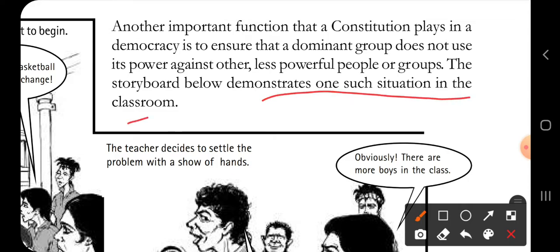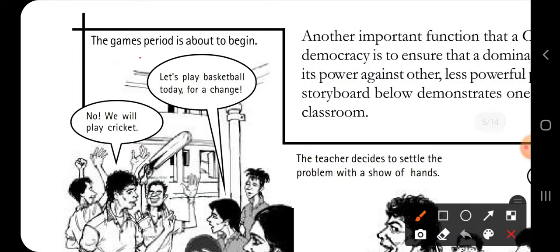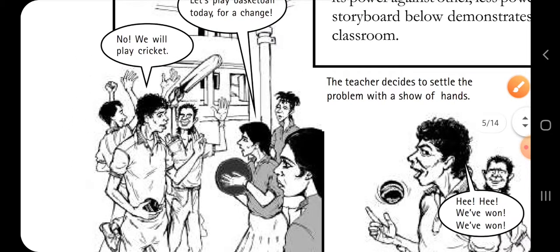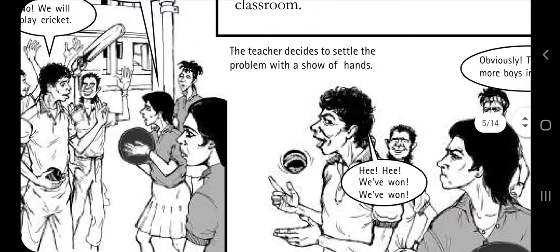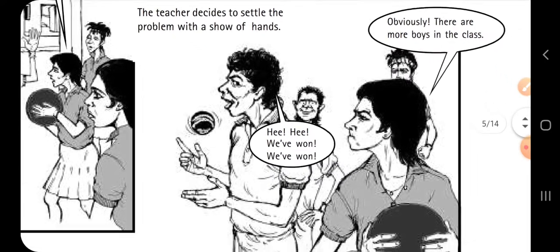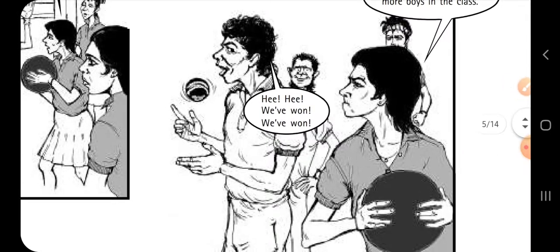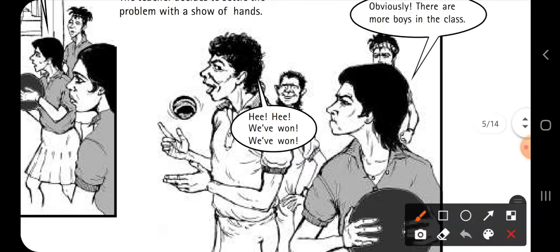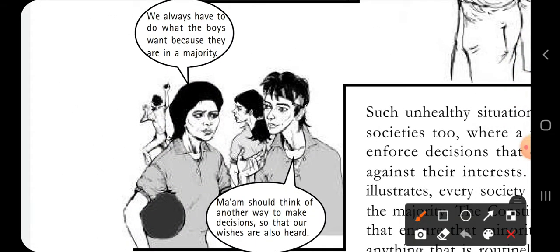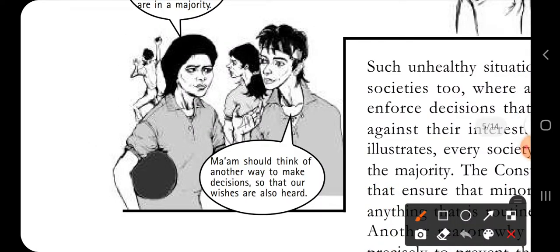Now we are going to read a story about discrimination against a small group by a big group. It is the ground period at school and the girls say they want to play basketball today for a change. But the boys say no, they will play cricket. The teacher decides to settle the problem with a show of hands. Since there are more boys than girls in the class, the majority wins and cricket is chosen. The girls say obviously they won't win because there are more boys than girls in the class.